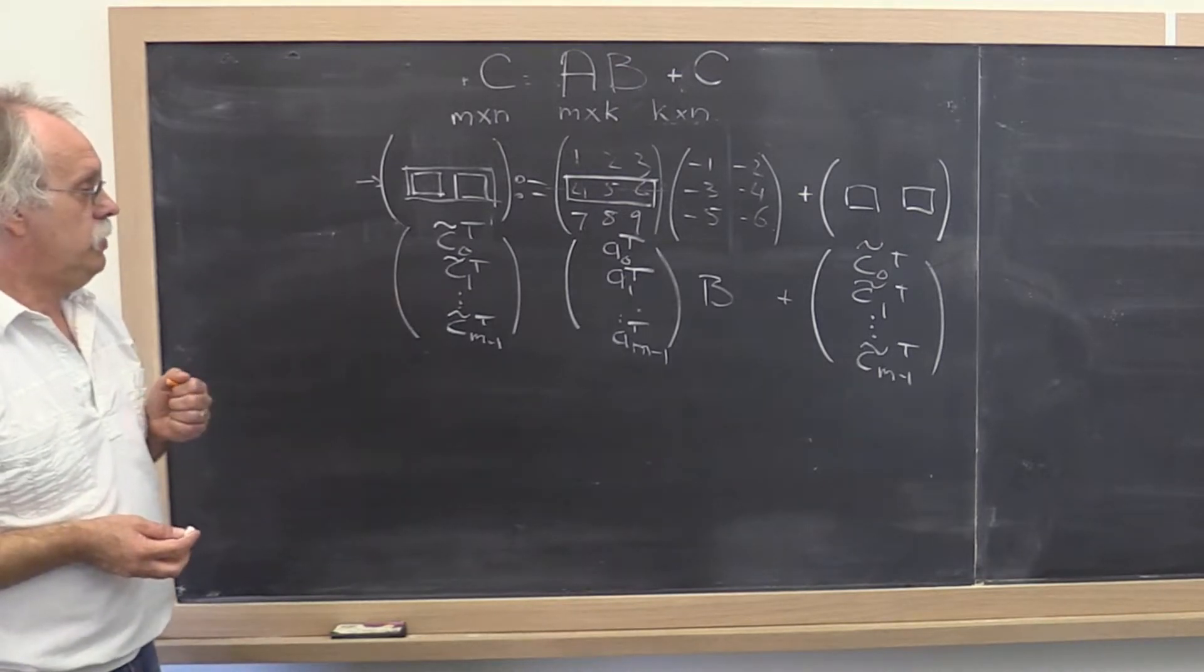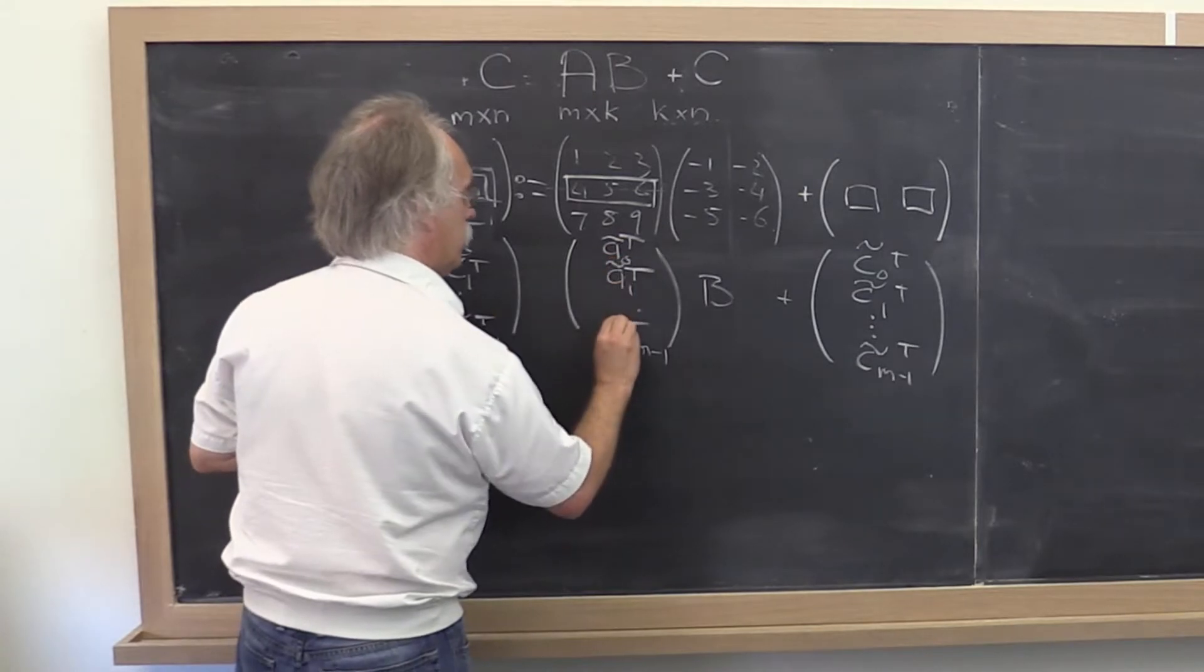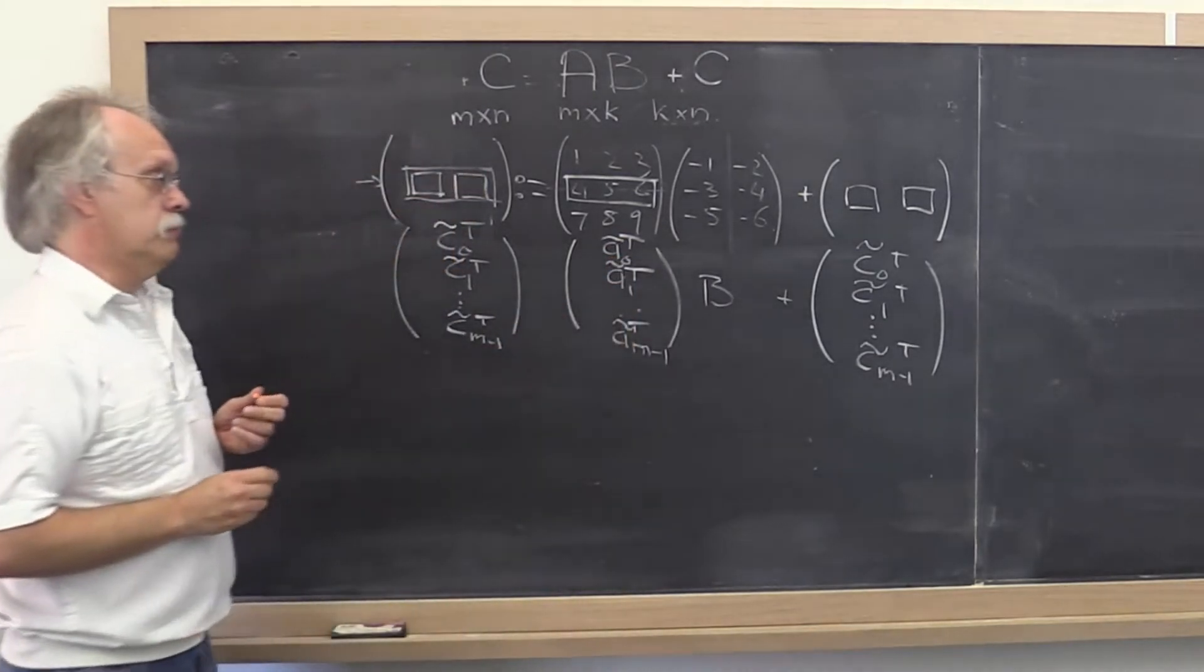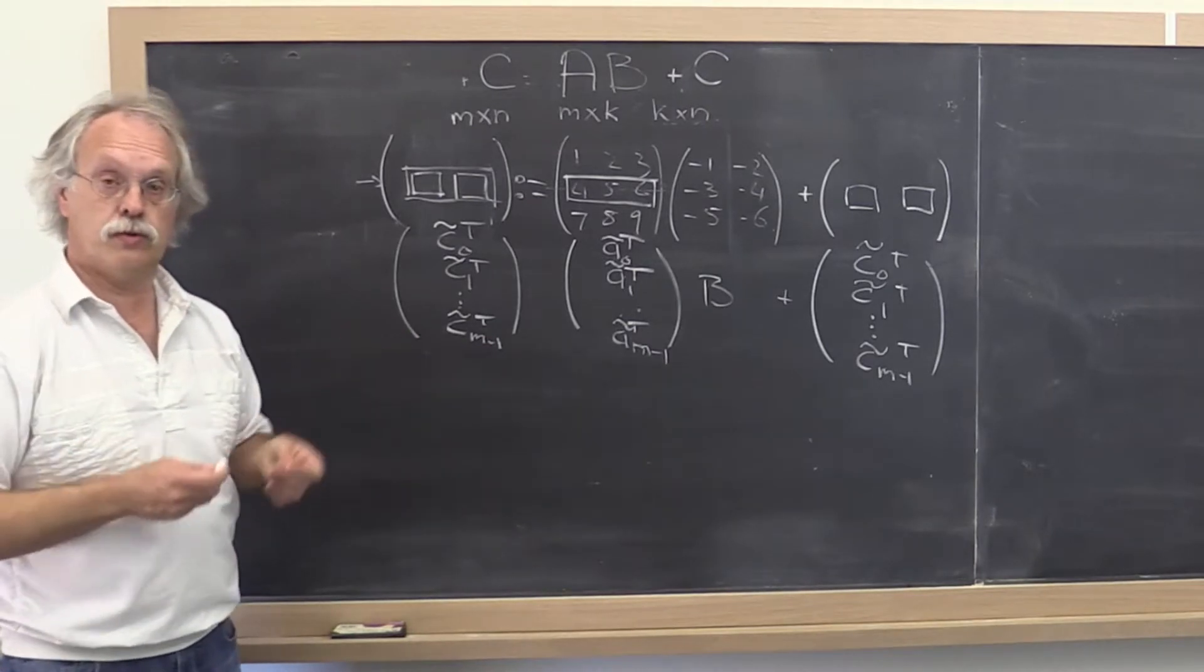And since we did that, we should probably go ahead and put tilde on A's too because later we're going to see that we're going to partition A by columns as well. So the confusion wouldn't happen right now, but the confusion will happen later on.